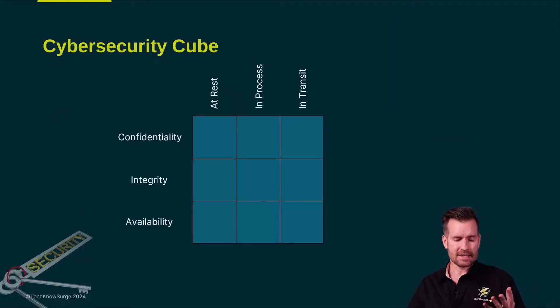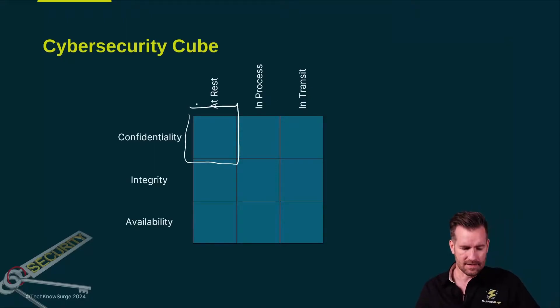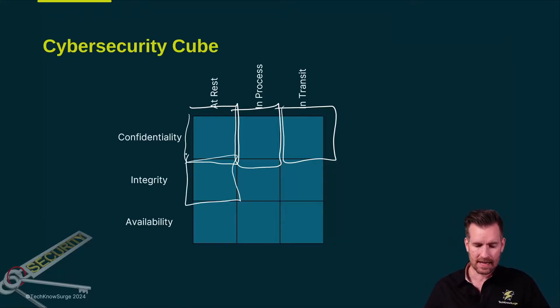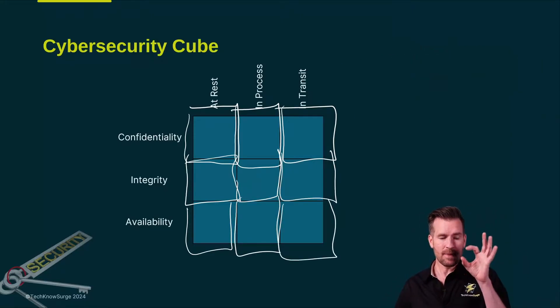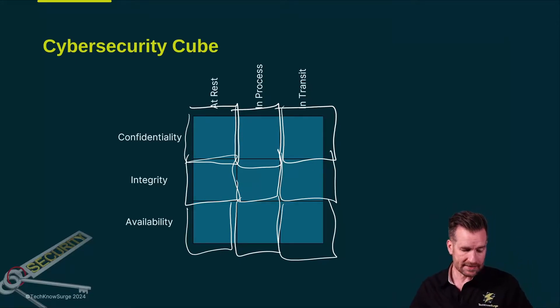So now we start thinking of things in a grid format. That is, how do we keep things confidential when it's at rest? How do we keep things confidential when it's in process? How do we keep things confidential when it's in transit? Same thing with integrity. How do we keep the integrity at rest? How do we keep the integrity when it's in process? What about in transit? And so we can start checking each one of these boxes and thinking about each one of these boxes separately to make sure we've got this covered. So for instance, let's say we want to do encryption. We're going to encrypt things when they are at rest to keep things confidential. Or maybe we use a VPN when it's in transit.